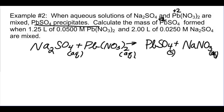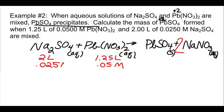We're given amounts of both reactants — bells and whistles — so this is a limiting reagent problem. We need to figure out who runs out first. Write down the given: 1.25 liters of 0.05 molar Pb(NO₃)₂ and 2 liters of 0.025 molar Na₂SO₄. They want the mass of PbSO₄ formed. We must identify the limiting reagent.